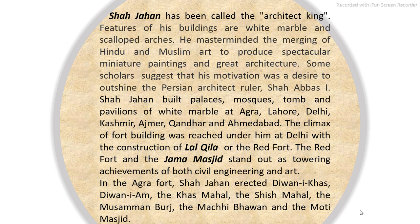The next great Mughal, Shah Jahan, has been called the architect king. Features of his buildings are white marble and scalloped arches. He masterminded the merging of Hindu and Muslim art to produce spectacular miniature paintings and great architecture. Some scholars suggest that Shah Jahan's motivation was a desire to outshine the Persian architect ruler Shah Abbas I. Shah Jahan built palaces, mosques, tombs and pavilions of white marble at Agra, Lahore, Delhi, Kashmir, Ajmer, Kandahar and Ahmedabad.